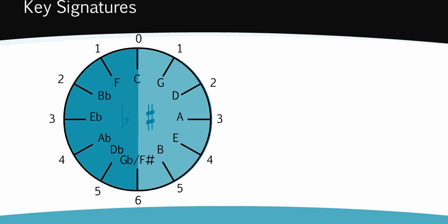Sharp keys are on the right and flat keys are on the left. You can see at a glance that D major has two sharps, or that D flat major has five flats, or that F sharp major has six sharps.